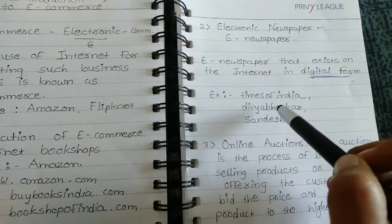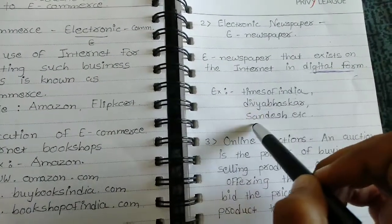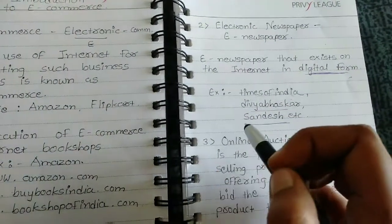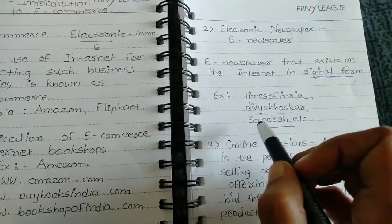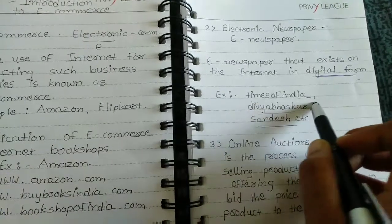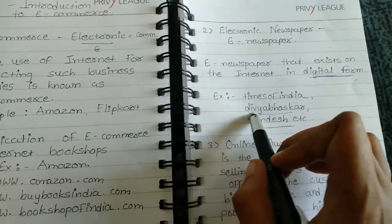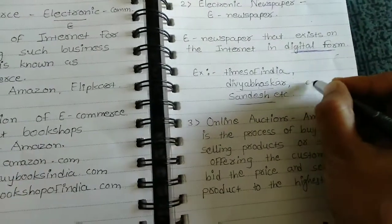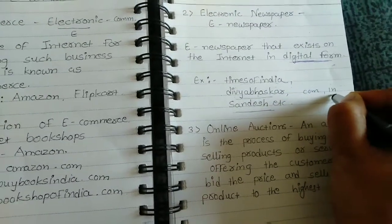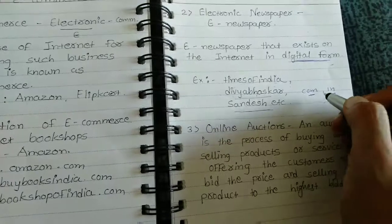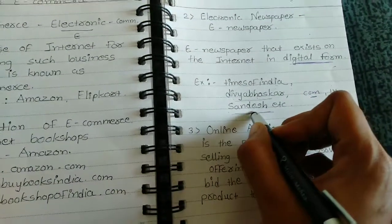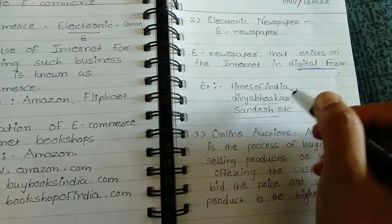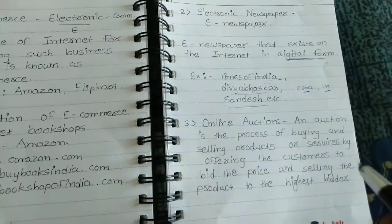Examples of electronic newspapers are Times of India, Divya Bhaskar, and Sandesh. If you want to read a newspaper online you can use www.timesofindia.com, www.divyabhaskar.in, or www.sandesh.com. You can write .com or .in — .in stands for India and .com stands for commercial.